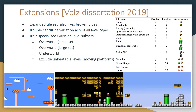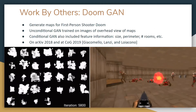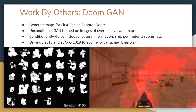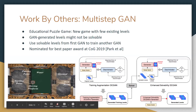This inspired other people. There was some work in Doom — levels generated by a GAN — on arXiv in 2018, published at the Conference on Games in 2019. Another thing at that same conference was a multi-step GAN approach. The authors were creating their own educational puzzle game with very little training data, and the GAN often produced unbeatable levels. Their multi-step process trained a GAN, ran a solver on produced levels, and if a level was beatable, added it to the training set to train a new GAN — a nice iterative approach.